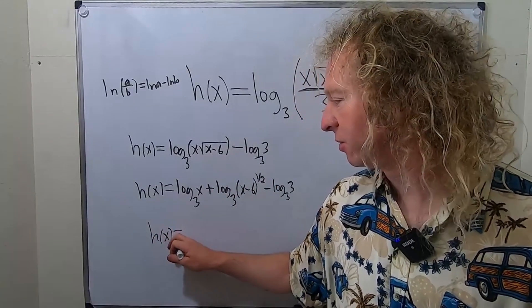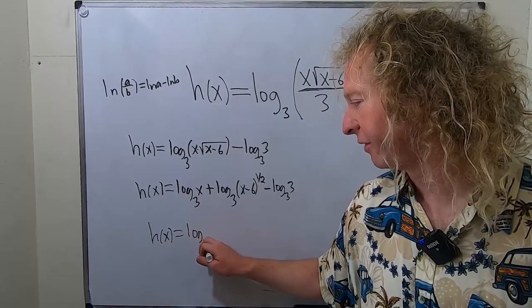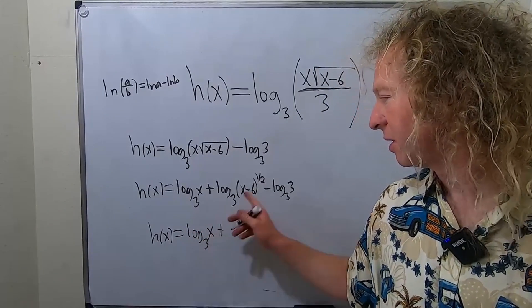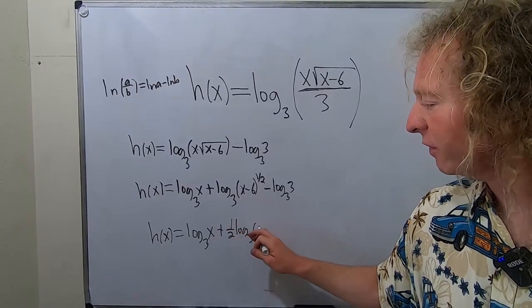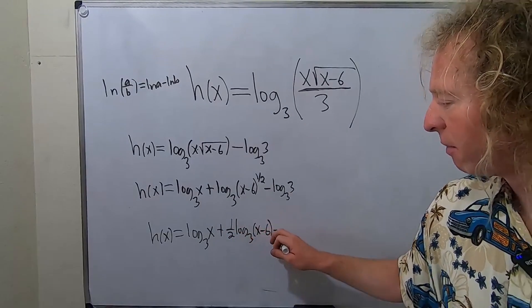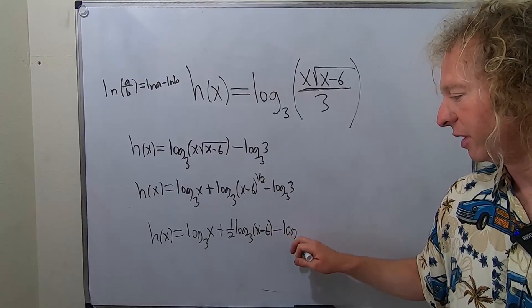So h of x is equal to log base 3 of x plus, and then just put the 1 half in the front, so 1 half log base 3 of x minus 6 minus log base 3 of 3.